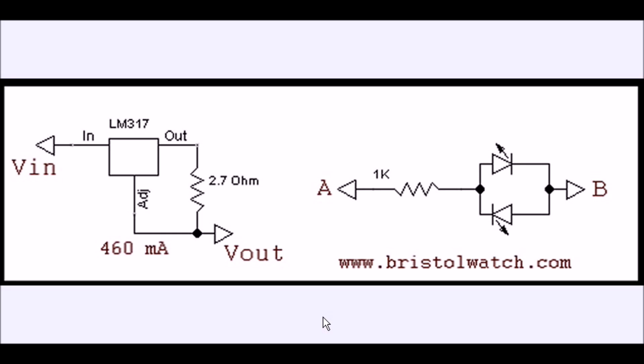Here are two parts to this H-Bridge project that are indispensable and I highly urge you to use them. Use a current limited power supply. That way if you wire up something wrong, the programming is wrong, and you switch on the wrong pairs of transistors or whatever, you won't blow up the power supply, you won't knock out your transistors, and that goes for MOSFETs or bipolar transistors, whatever you're using.